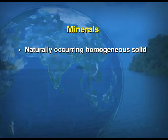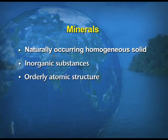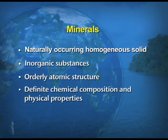How do we define the word mineral? There are four proper characteristics of a mineral. Number one, minerals are naturally occurring homogenous solids. Number two, minerals are normally inorganic substances. Number three, they have an orderly atomic structure. And number four, all minerals have a definite chemical composition and physical properties.